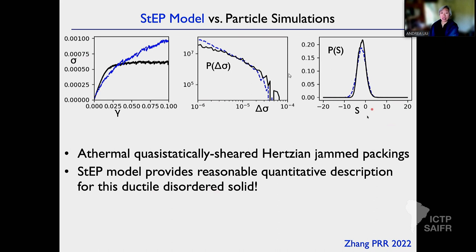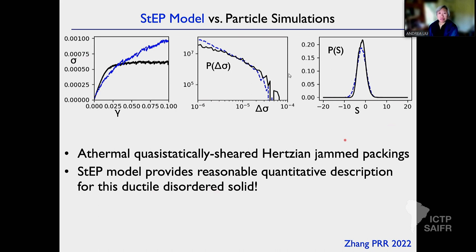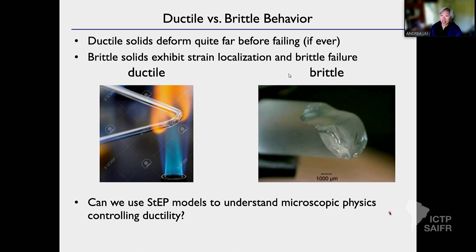That's for ductile solids. But now we'd like to understand ductile versus brittle behavior — some systems can bend while others just form shear bands and break. Can we use these models to understand what controls ductility? Our proxy for ductility is strain localization.